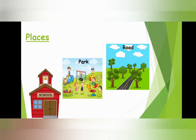Dear students, let's discuss about places. Look at the first picture. It is school. School is the name of a place — it is a naming word. Park is a naming word and it is the name of a place. Road is the name of a place and it is also a naming word. So school, park and road are some examples of naming words.